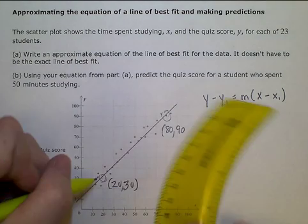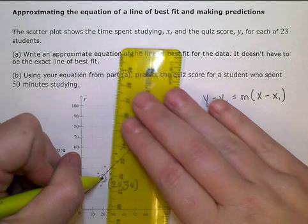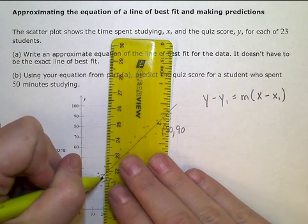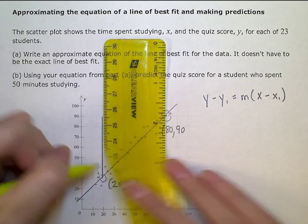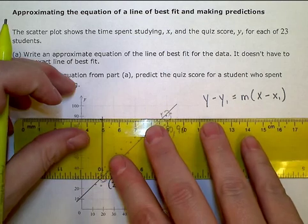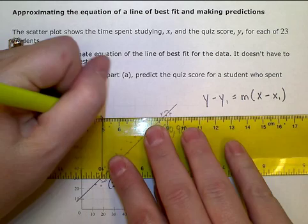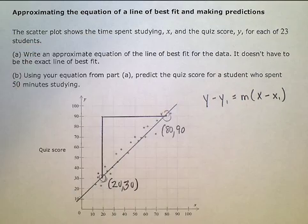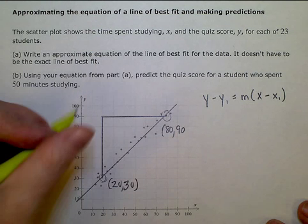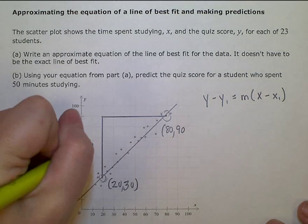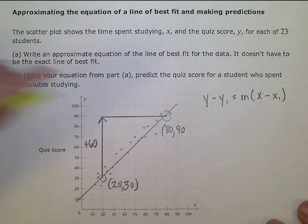If I'm going from this coordinate up to this one over here and I draw in my slope triangle, I can see I'm going from 30 to 90 up. So 60 up, that's my rise.